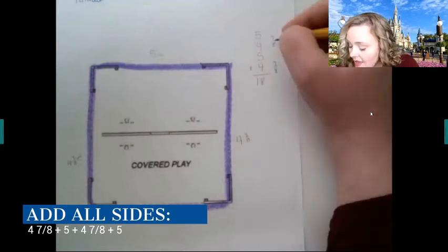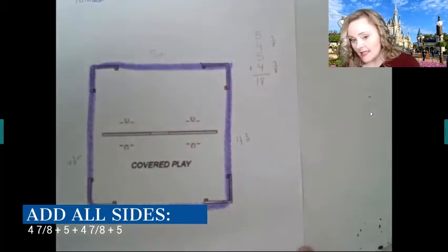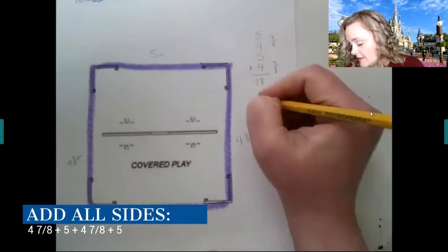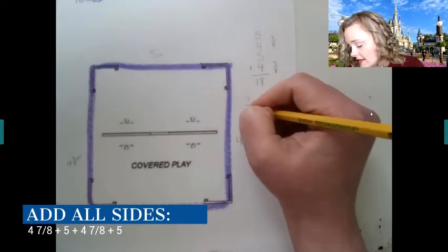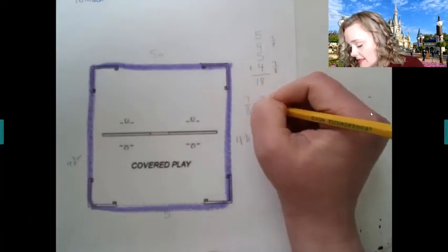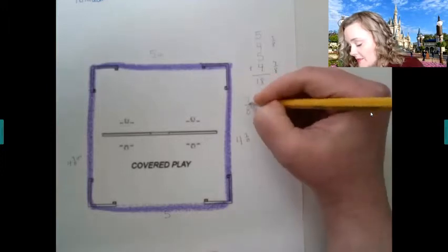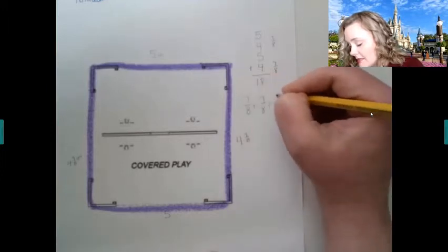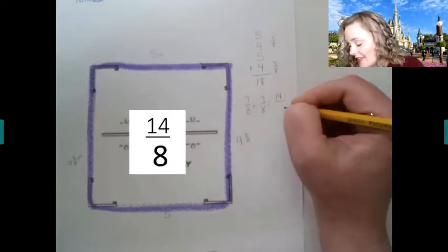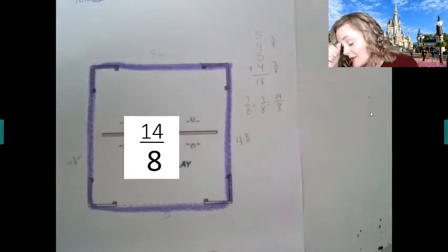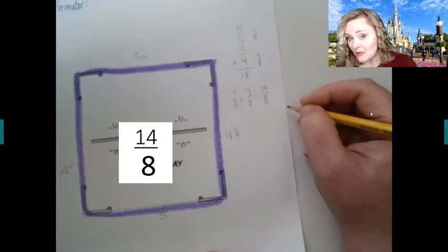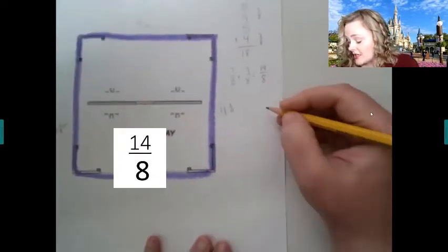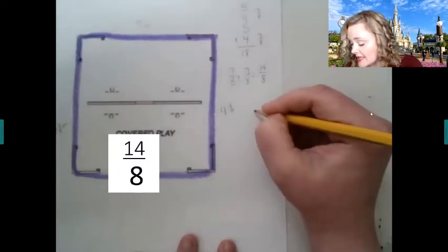And then I'm going to think about seven eighths plus seven eighths. Well, seven eighths plus seven eighths - if we have seven parts and seven parts, that means we have 14 parts in all, and they come in groups of eight. So I can make this into a mixed number, which we've just learned about in our fraction unit. So I'm going to take 14 eighths.